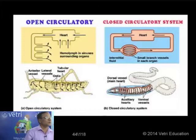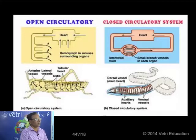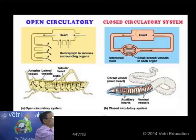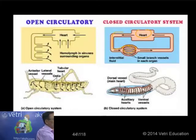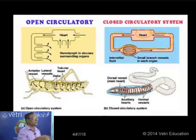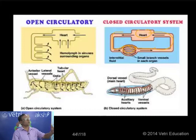The earthworm is the first animal to have developed a closed circulatory system. In annelids, the heart pumps the blood, which reaches various organs through blood vessels. From the organs, blood is collected again by blood vessels and carried back to the heart. The blood is always circulating through blood vessels — that is why it is called a closed type of circulatory system, seen in annelids and chordates.